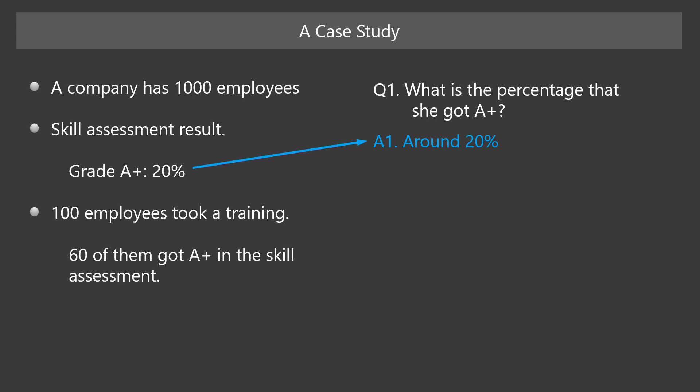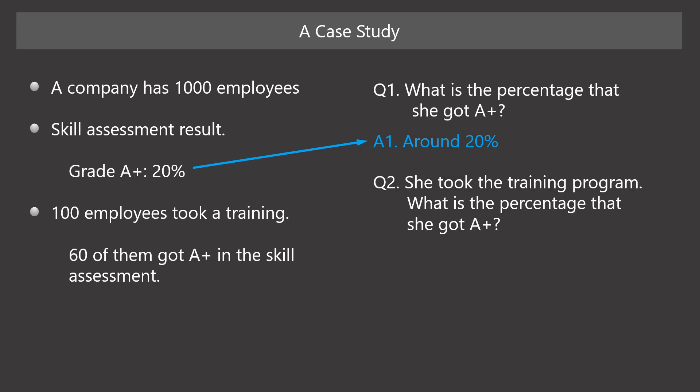Next, suppose she said she had taken the training program, and suppose she did not tell a lie. Now we have information that she took the training program. As we know, 60% of the employees who took the program got A+. So we can estimate that the probability is about 60%. This is a problem of conditional probability.